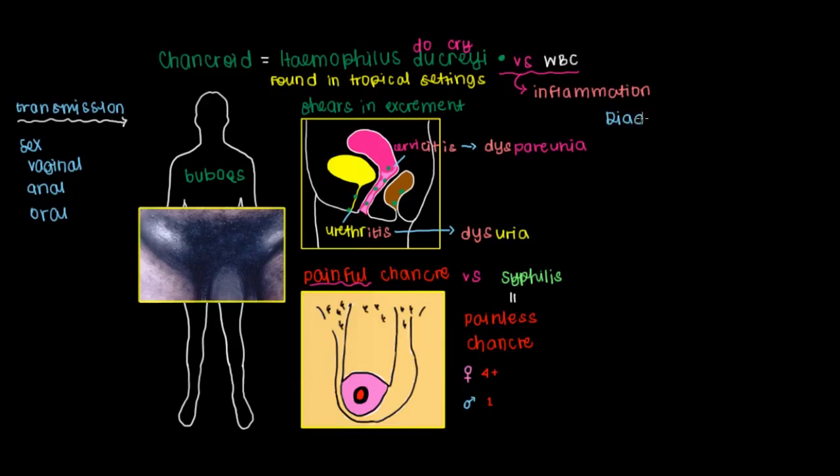Moving on to diagnosis of chancroid. There are three main tests that are used. The first is a classic Gram stain. What you'll see under the microscope if you've got chancroid are Gram-negative coccobacilli. Gram-negative bacteria in a Gram stain will usually turn up red or saffron.